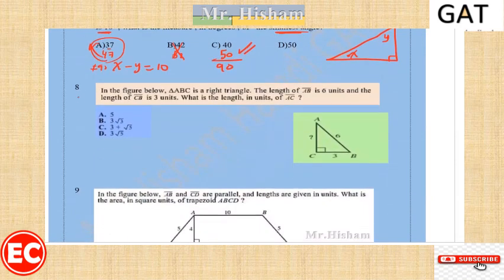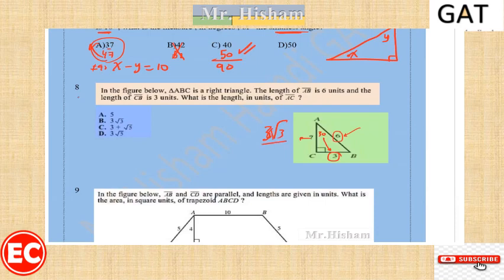Question eight: triangle ABC is a right angle triangle. The length of AB is 6 and the length of CB is 3. This side is half of the hypotenuse, so this angle is equal to 30 degrees because the side opposite to it is half the hypotenuse. Therefore AC is equal to 3 root 3, using the special right angle triangle rules.